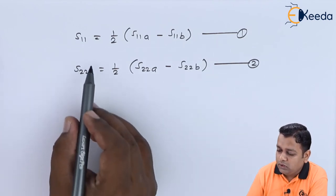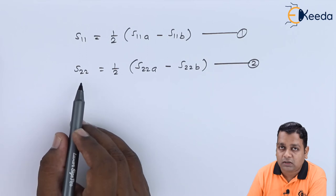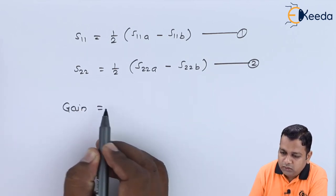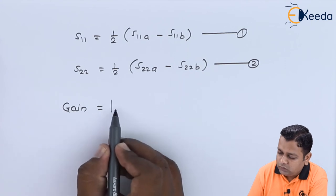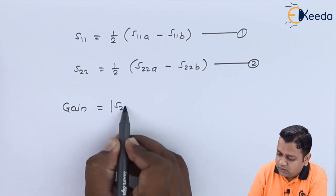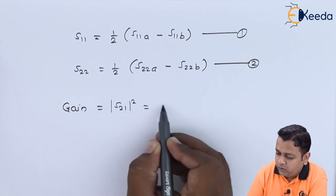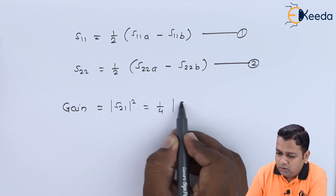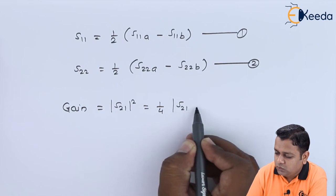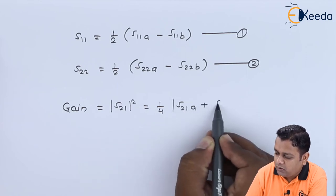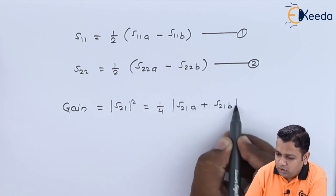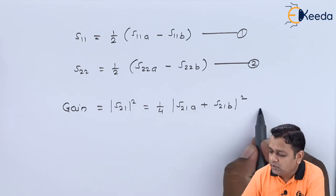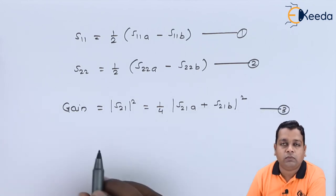From S_11 and S_22, the gain for the device is given by |S_21|² = (1/4)|S_21a + S_21b|² — this is equation 3.